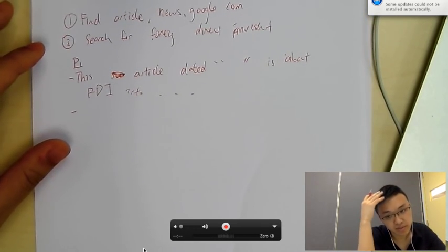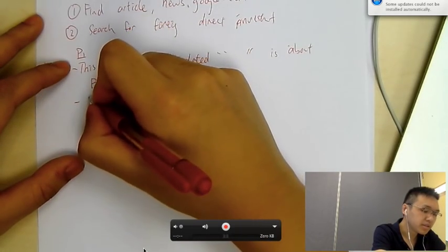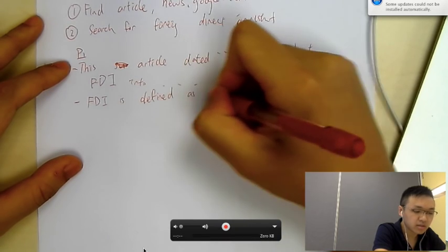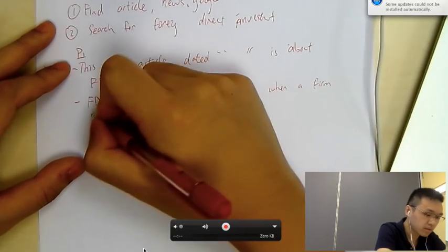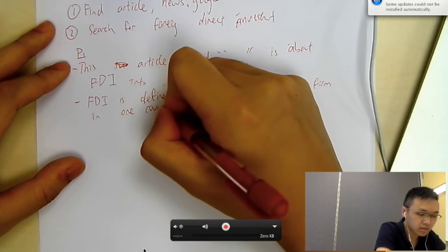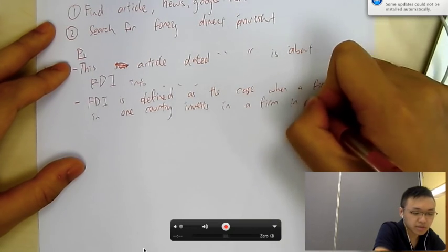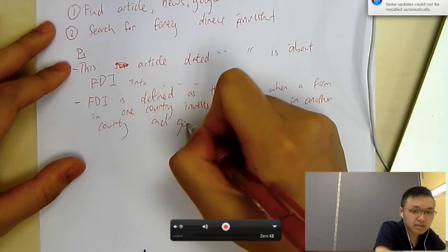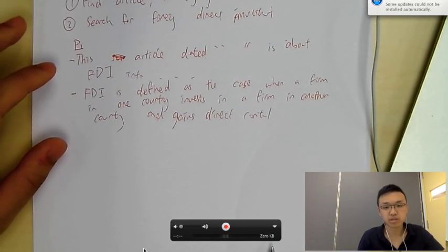So, what does the FDI do? Well, you need to define FDI first. So, FDI is defined as the case when a firm in one country invests in a firm in another country and gains direct control. This is the definition of FDI. I want a firm in a country, invests in a firm in another country, and gains direct control, all right?